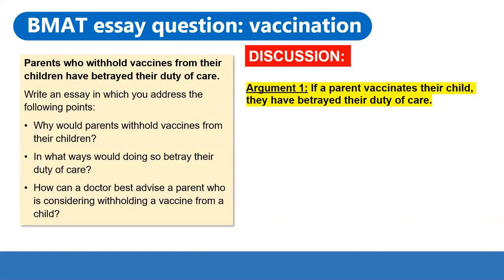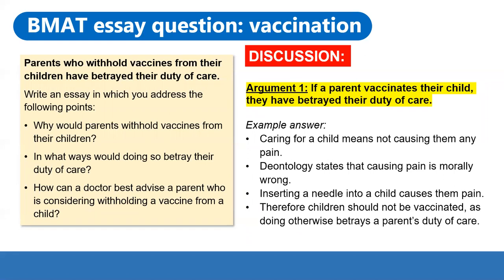Here's an example answer using deontology. Caring for a child means not causing them any pain, and deontology states that causing pain is morally wrong. We know that vaccination involves the insertion of a needle into the skin, which causes a child pain. Therefore, you could argue that according to deontology, children shouldn't be vaccinated, as doing otherwise betrays a parent's duty of care. This is a fairly weak argument, but it's a good way of showing how deontology can be used to justify certain points as ethical or moral.